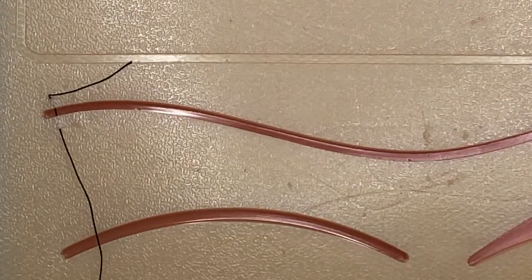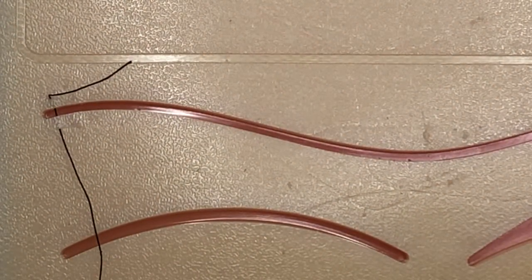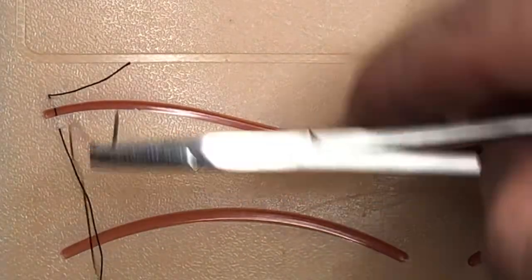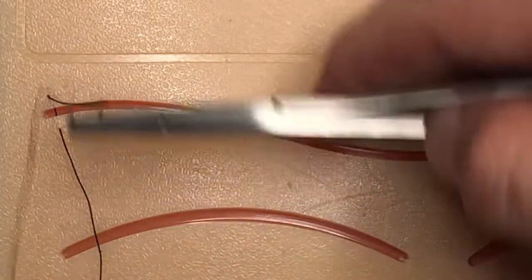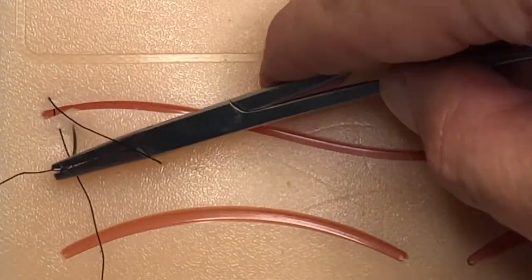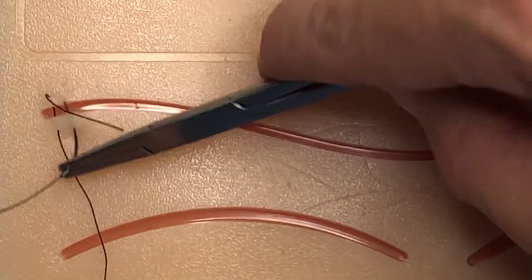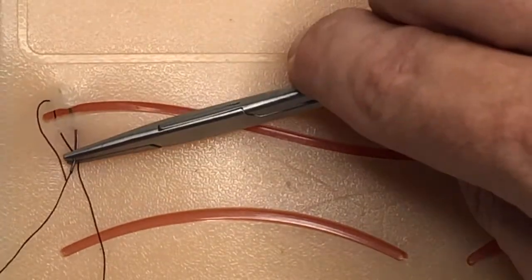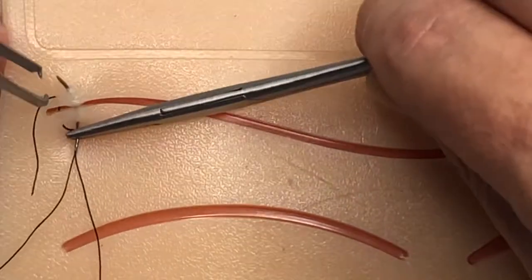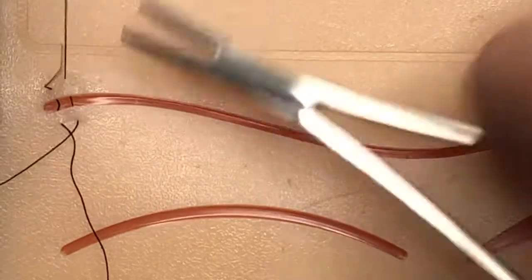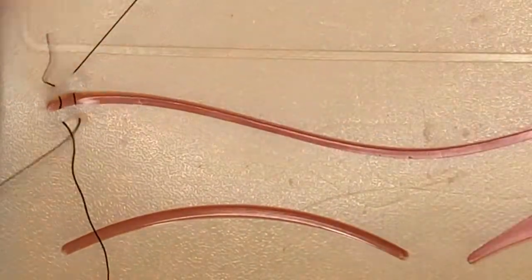We've got our needle loaded in the needle driver and we're going to go back through, just like that, through on the opposite side. Come up and you can use your tissue forceps to hold and grasp the needle, pull it through.